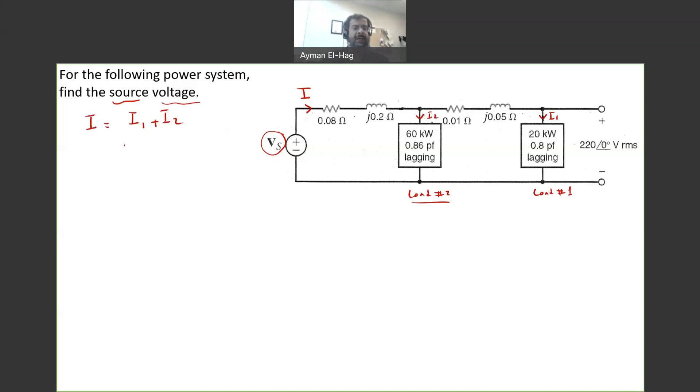So let's start finding I1. I1 is equal to P divided by the voltage times the power factor. So it's equal to 20 times 10 to the power of 3, divided by the voltage, which is 220. Power factor is 0.8. And this will give me a current 114 A. This is only the magnitude. I want to find the angle.